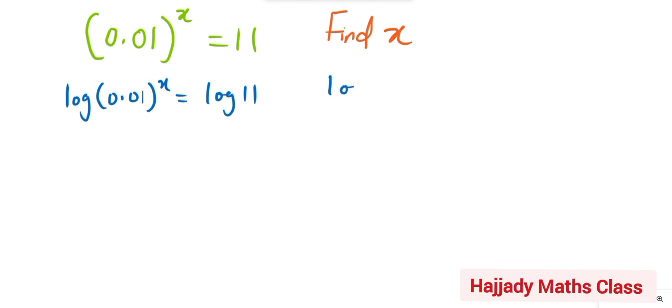So we are using the same thing, so this is coming to the back. Here we have x log(0.01) = log 11.